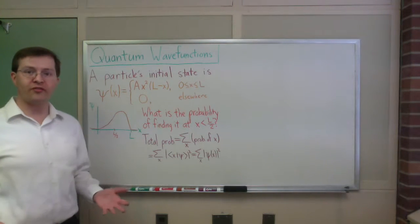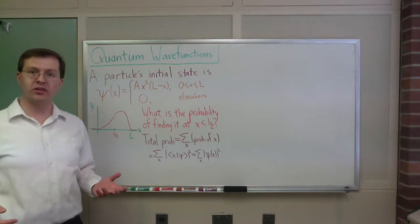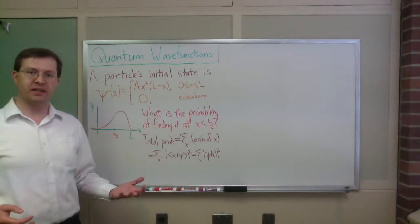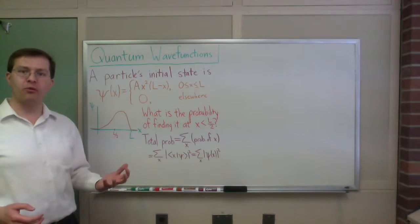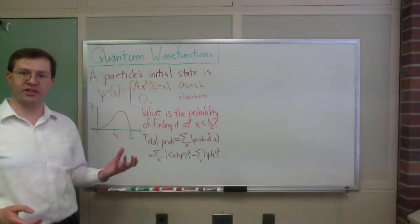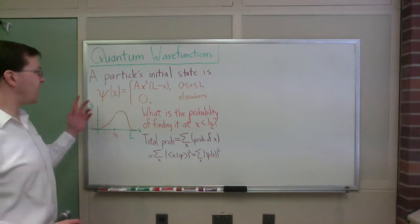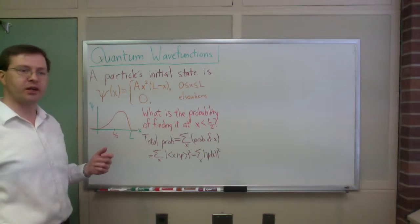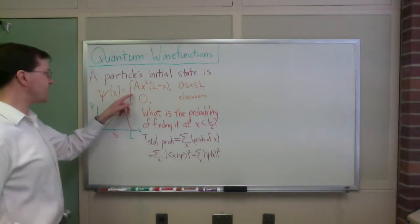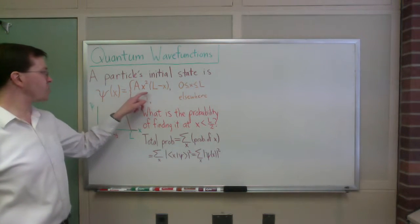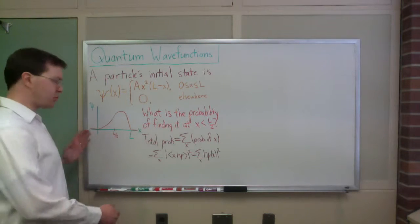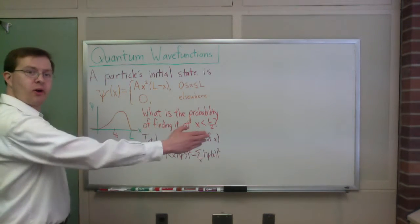I want to do a quick example of wave functions of quantum mechanics, in particular how we think about probability in relation to wave functions, the probability that a quantum particle is at a particular position or in a particular range.